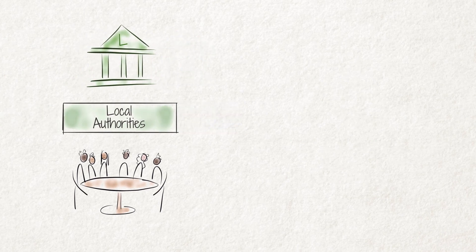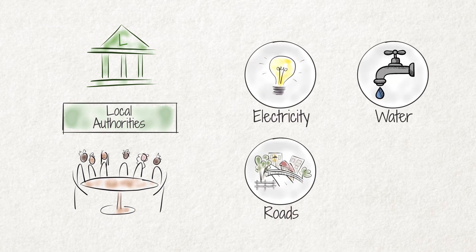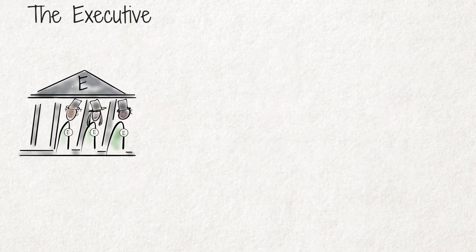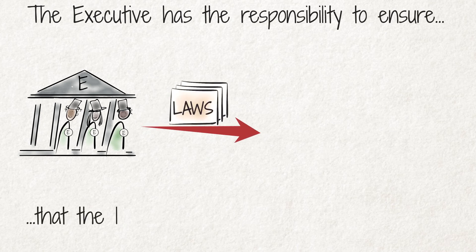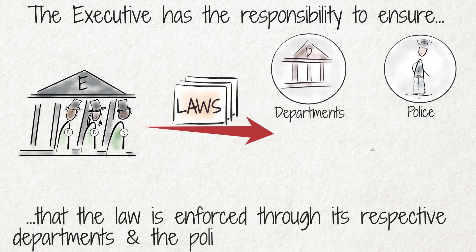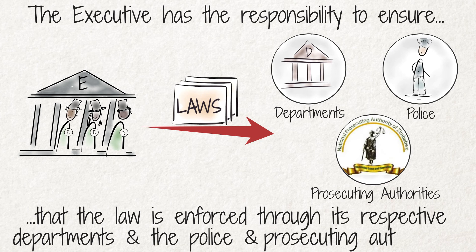Local authorities such as urban and rural councils provide the people living in their areas with municipal services such as electricity, water, roads, and refuse removal. The executive further has the responsibility to ensure that the law is enforced through its respective departments and the police and prosecuting authorities.